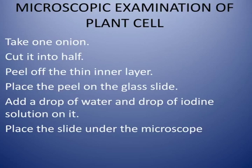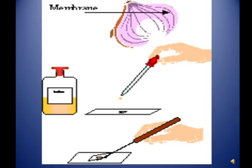Place the cover slip on it and tap with a needle to remove bubbles. Place the slide under the microscope and observe. The image here shows how to complete this activity — cut the onion in half, peel it, place the peel on the glass slide, add a drop of water and a drop of iodine solution, tap with the needle, and observe under the microscope.